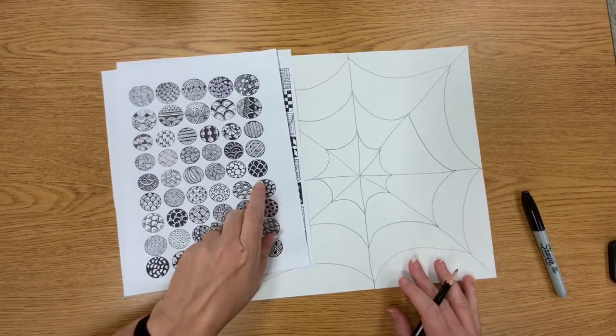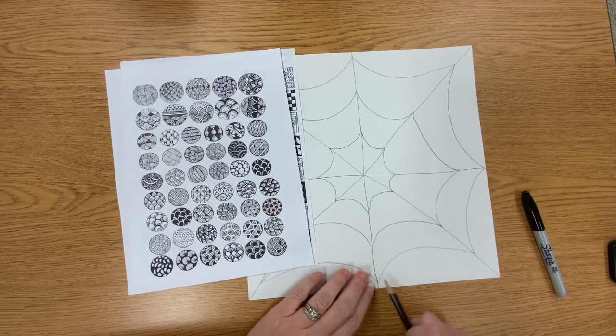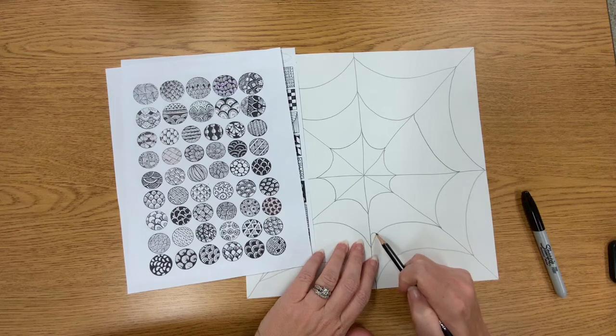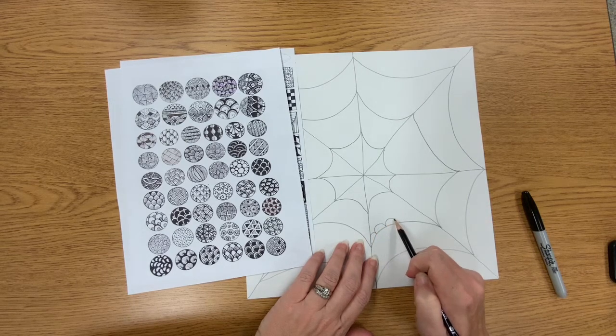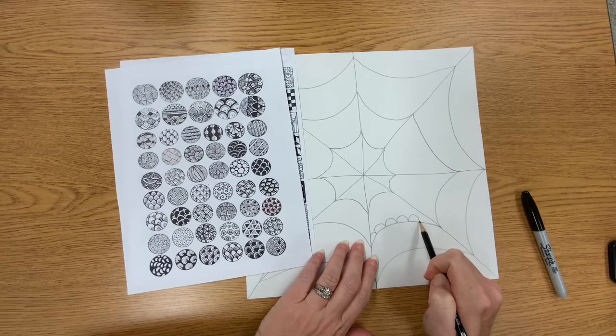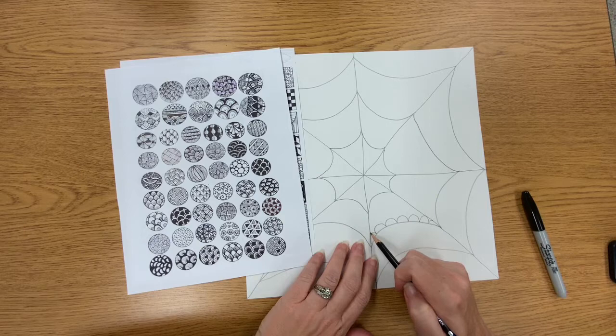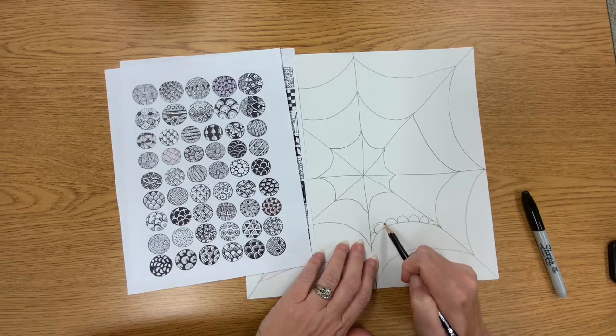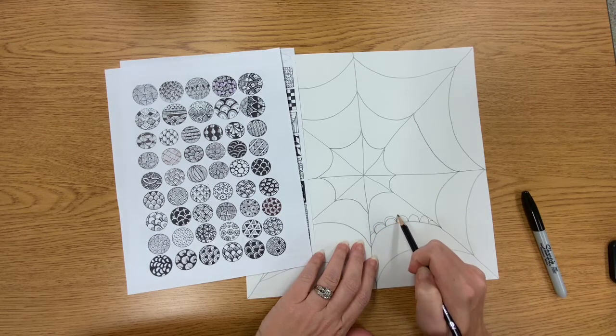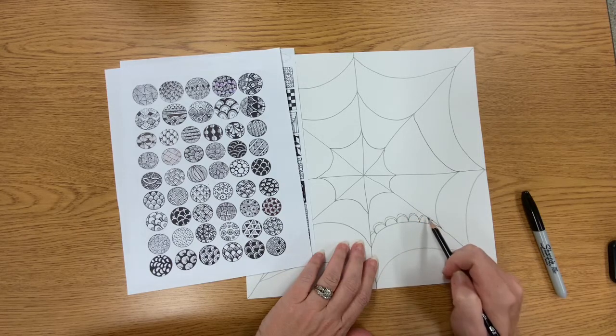Let's say I wanted to do this one—I would just start, and then I'm going to come in and do a little one that I could leave white.